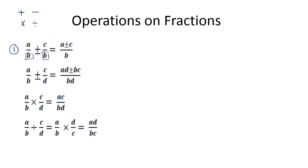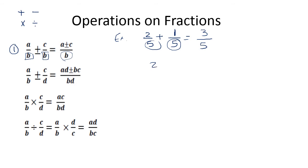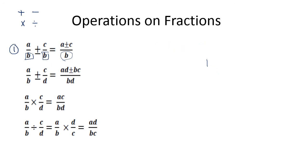We put down the same denominator and add or subtract the numerators. For example, two over five plus one over five — I have the same denominator five, so I put it down and two plus one is three. In the case of subtraction with the same denominator, we put down the denominator and two minus one is one. Notice that in all operations we are not going to use a calculator.